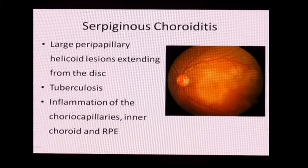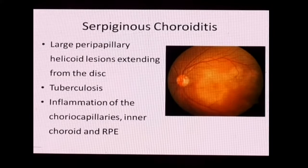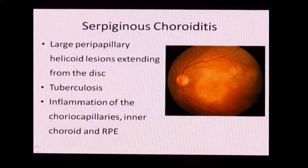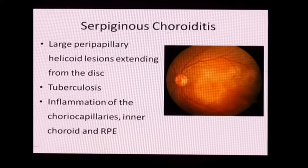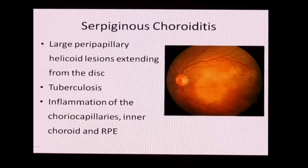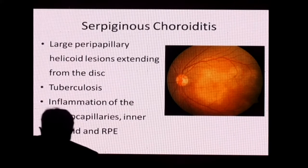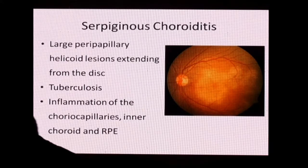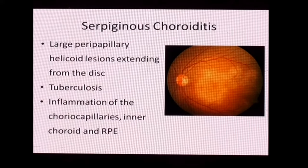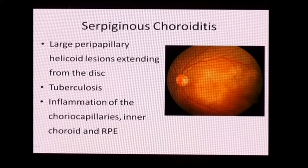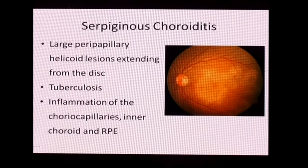The next white dot syndrome is serpigenous choroiditis, described as large peripapillary placoid lesions which extend from the disc. Earlier it was thought to be autoimmune, but in India we believe this could be due to tuberculosis, and many cases have responded to anti-tubercular therapy. It is usually a result of inflammation of the choriocapillaris, inner choroid, and retinal pigment epithelium.